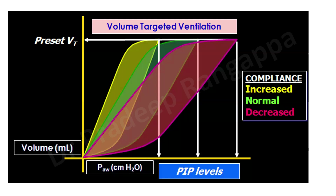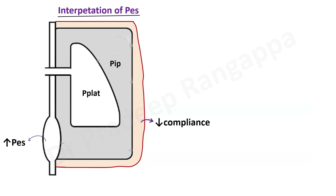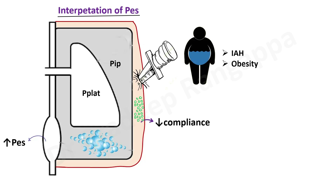Now let's look at the bearing of chest wall pressure. The esophageal manometer provides a surrogate of pleural pressure. There are conditions where esophageal pressures are high — specifically when chest wall compliance is reduced. This occurs with pleural effusion, chest wall edema, chest wall trauma, muscle fluid sequestration, massive ascites, intra-abdominal hypertension, and obesity. All these conditions reduce chest wall compliance, which increases esophageal pressure and therefore pleural pressure.